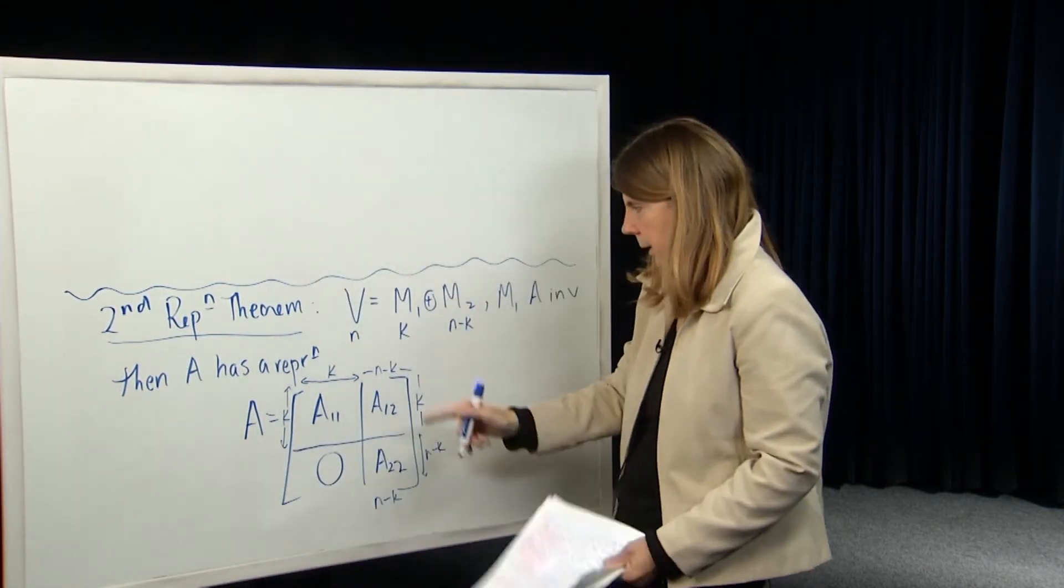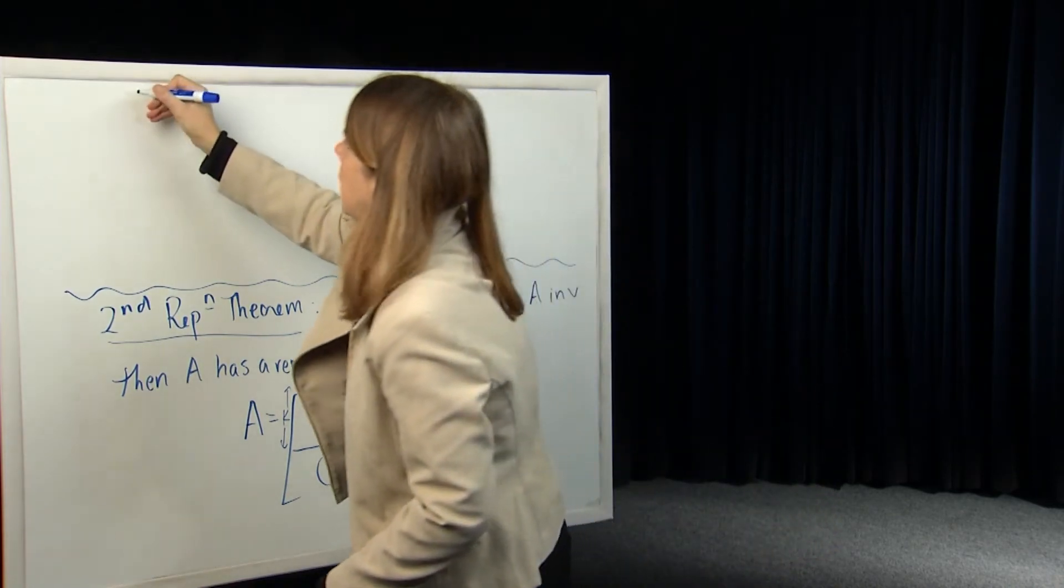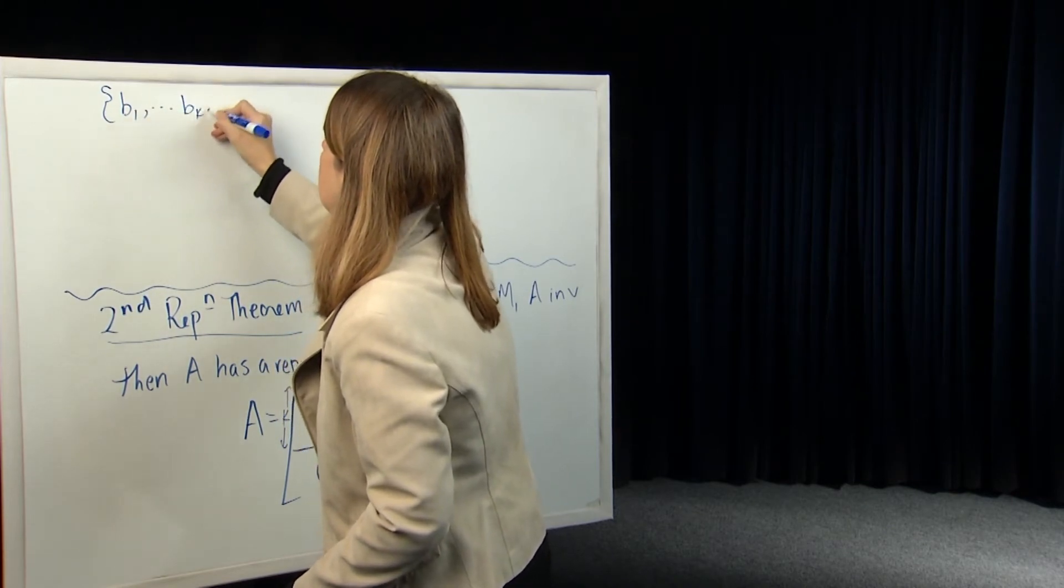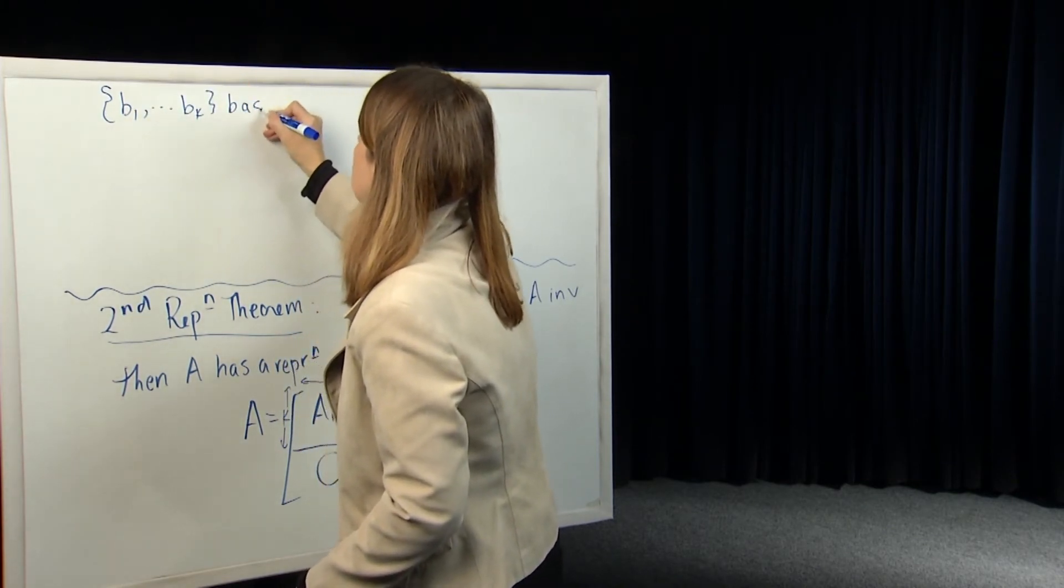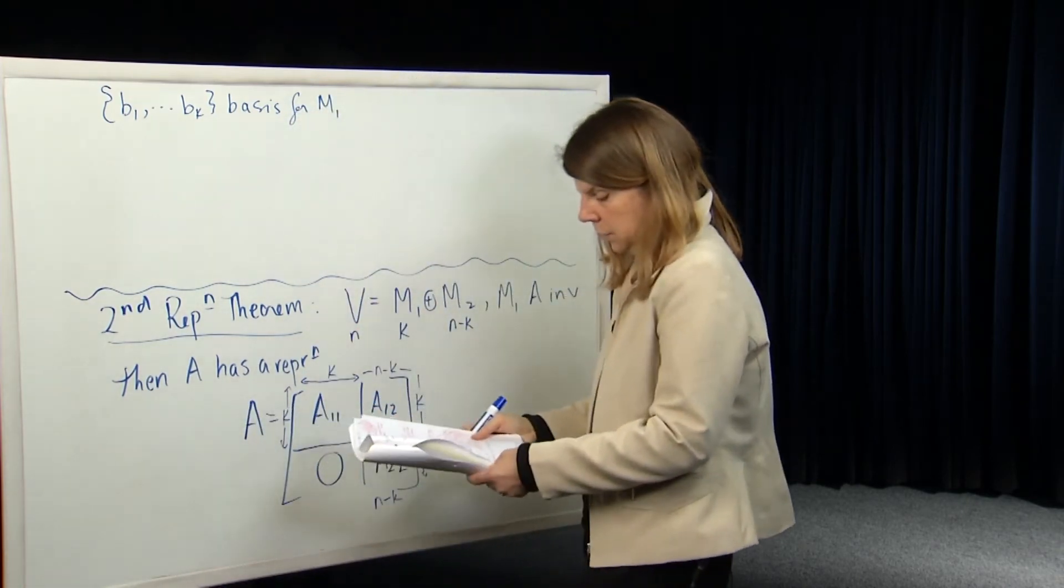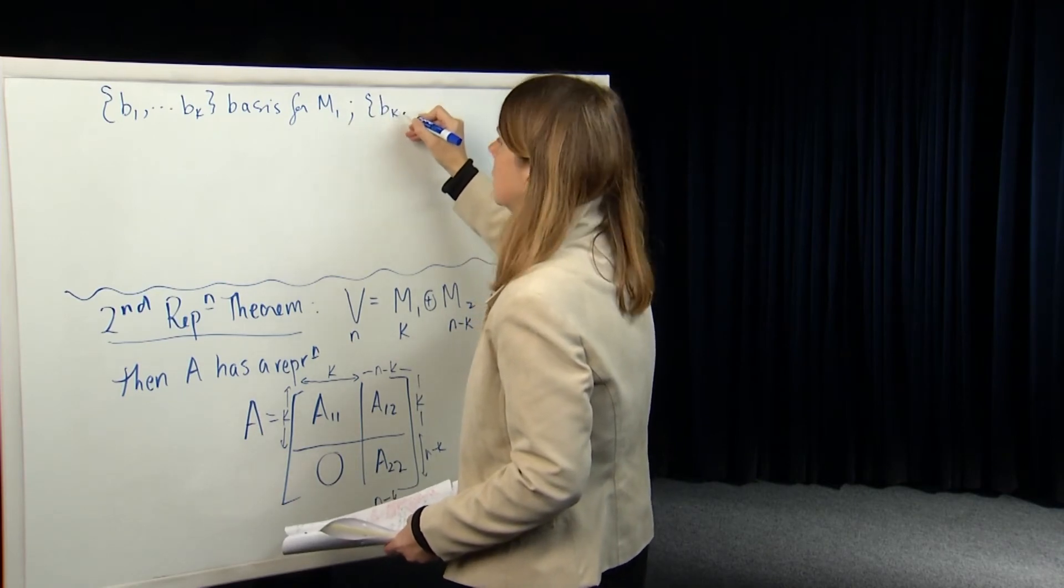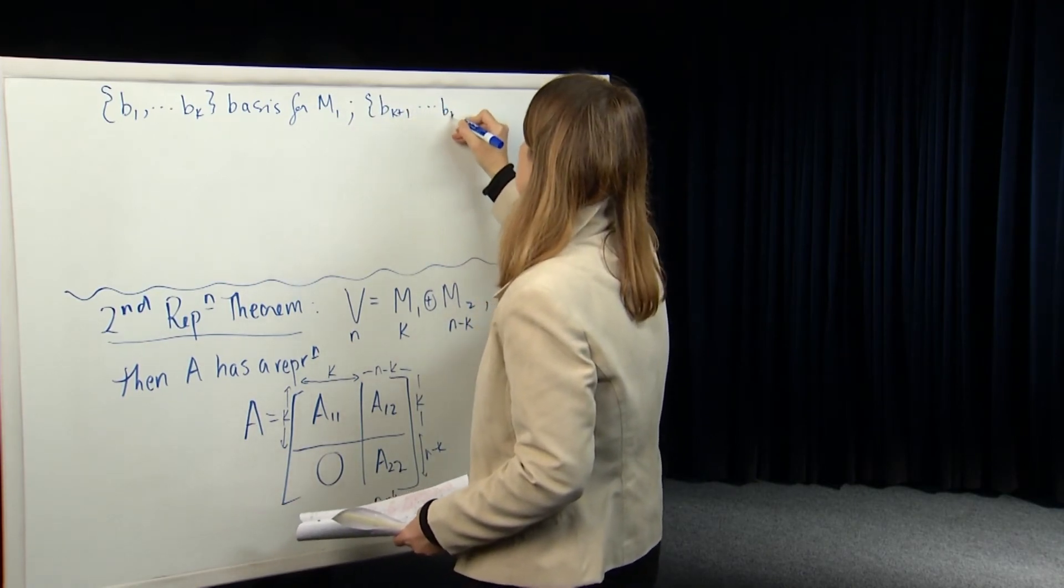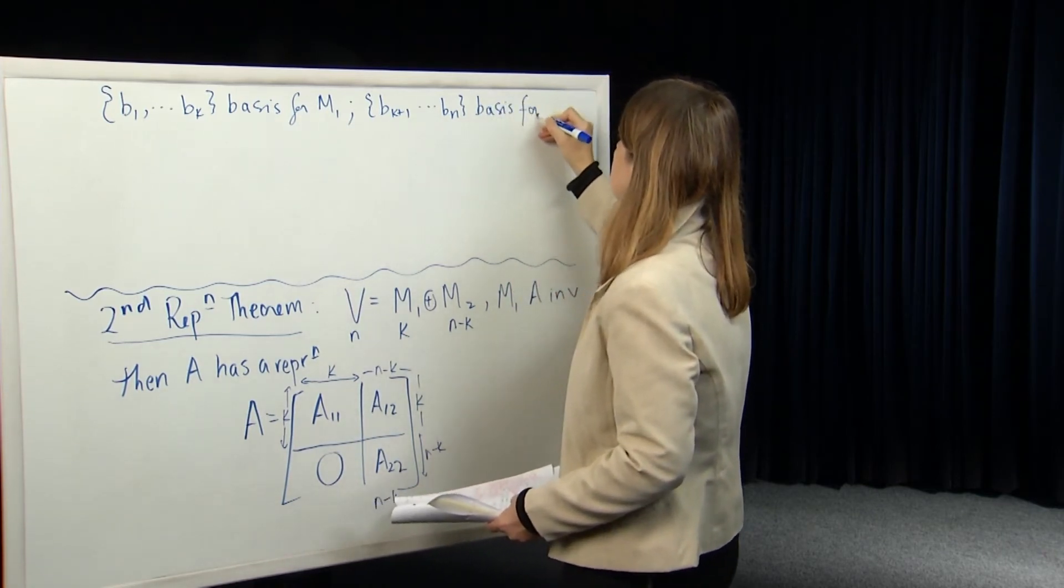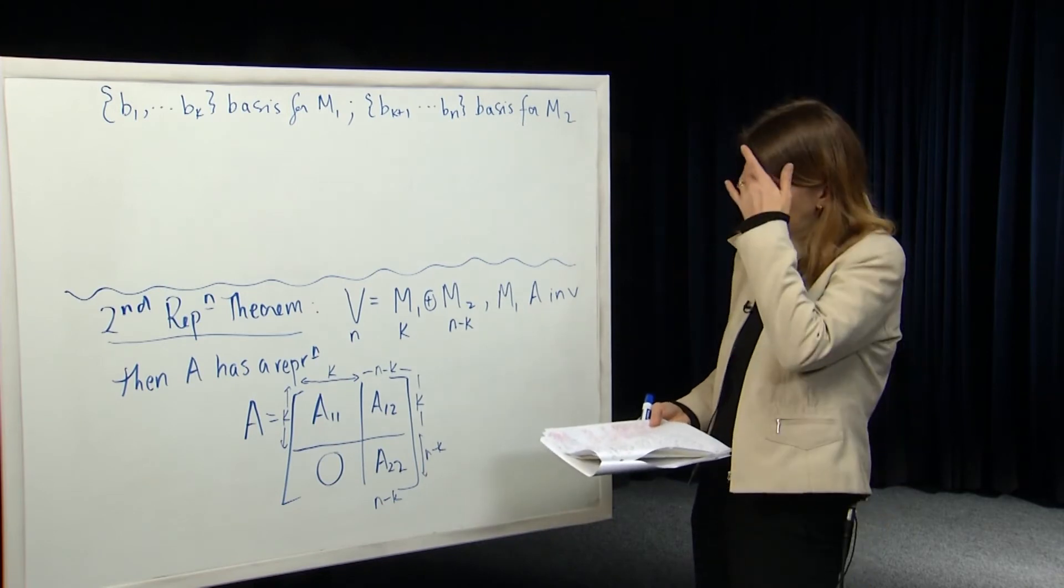So we can just think about the proof up here. So let's construct a basis for M1 and for M2. So I'll use B to represent the basis. B1 up to BK is a basis for M1. And then we'll use BK plus 1 up to BN is a basis for M2.